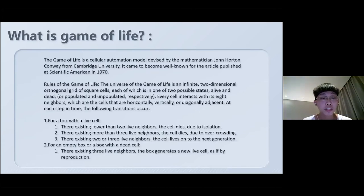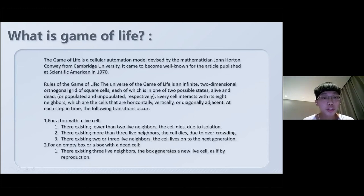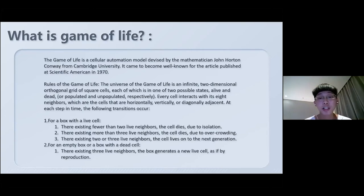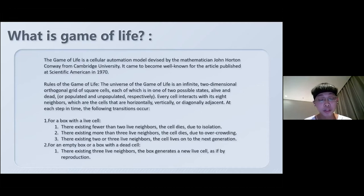The rules of the Game of Life are as follows. The universe of the Game of Life is an infinite two-dimensional orthogonal grid of square cells, each of which is in one of two possible states: life and death, or populated and unpopulated, respectively. Every cell interacts with its eight neighbors, which are the cells that are horizontally, vertically, or diagonally adjacent. At each step in time, the following transitions occur.